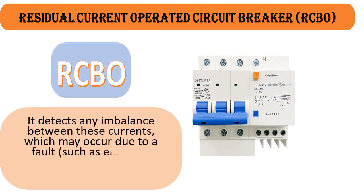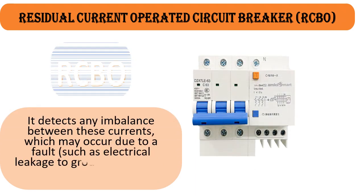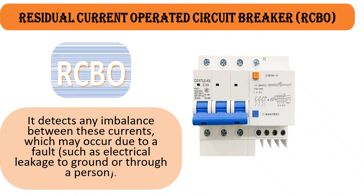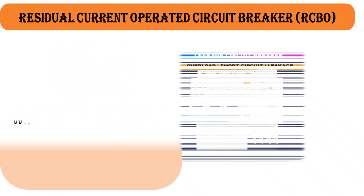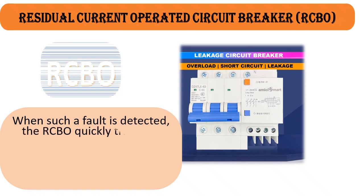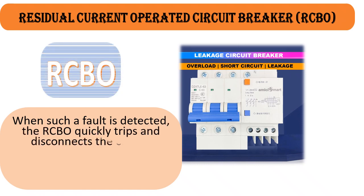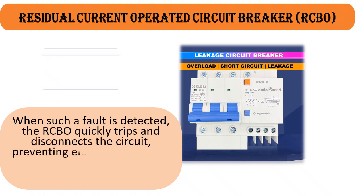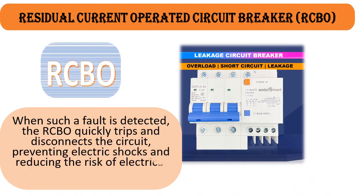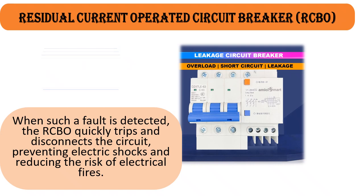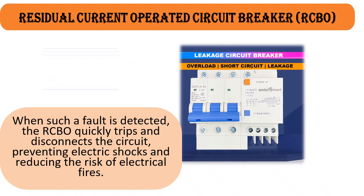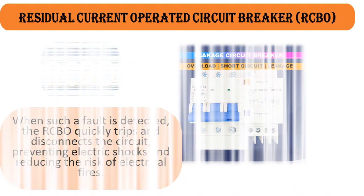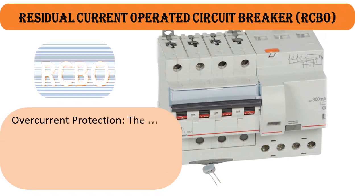An imbalance may occur due to a fault, such as electrical leakage to ground or through a person. When such a fault is detected, the RCBO quickly trips and disconnects the circuit, preventing electric shocks and reducing the risk of electrical fires.